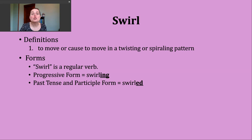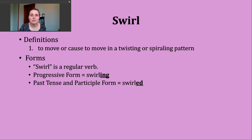You should know that swirl is a regular verb. To make the progressive form of this verb, all you need to do is add -ing to form swirling. The past tense and participle forms can be made by adding -ed. Our base verb swirl ends in a voiced L sound, which means our past tense ending is just going to make a D sound — no extra syllable. It should sound like this: swirled.